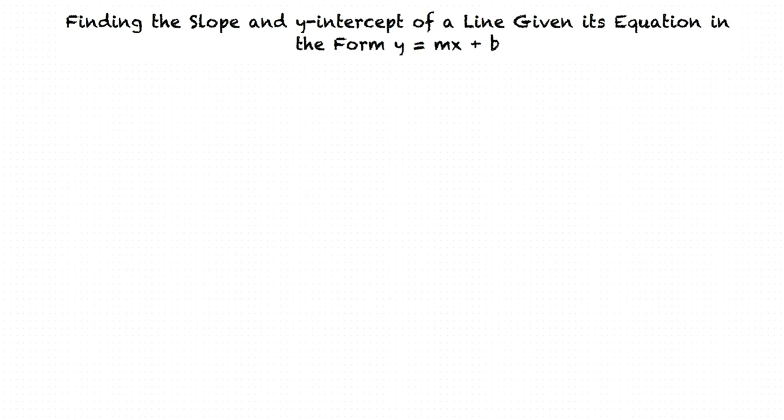This video will cover the topic of finding the slope and y-intercept of a line given its equation in the form y equals mx plus b. The form y equals mx plus b is called the slope-intercept form of a linear function, meaning that the slope and the y-intercept can be found just by looking at the equation.